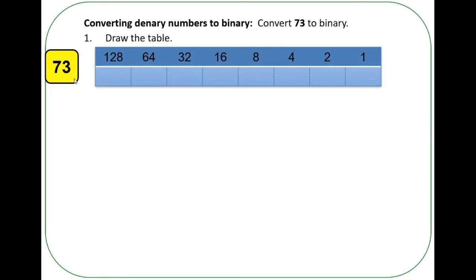Now the point about 73 is that there is only one possible combination of these numbers that will make 73.